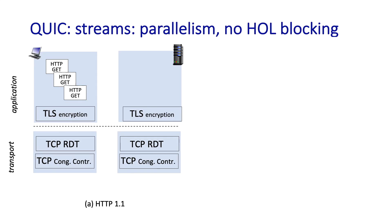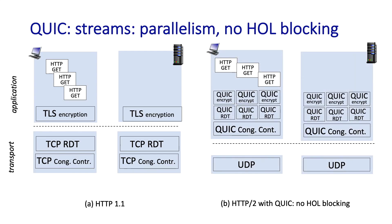QUIC also introduces the notion of multiple application-level streams that are multiplexed over a single QUIC connection. In the case of HTTP 3, you can think of n streams being set up — one for each of the n objects that need to be retrieved from a web server. In traditional HTTP, multiple objects would be retrieved serially, one after another. The advantage of having multiple streams is that multiple web objects can be retrieved concurrently. Each individual stream has its own reliability and security, but they're all congestion controlled by a common congestion control protocol, which looks like TCP.